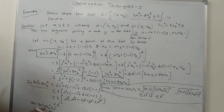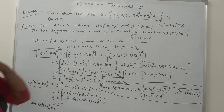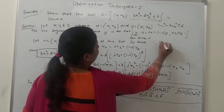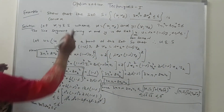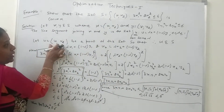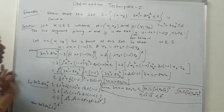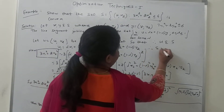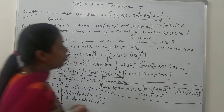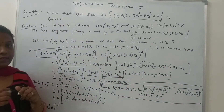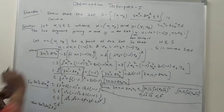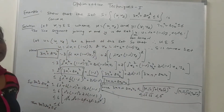So 3U1² + 2U2² ≤ λ²·6 + (1−λ)²·6 + 2λ(1−λ)·6 = 6[λ² + (1−λ)² + 2λ(1−λ)] = 6[λ + (1−λ)]² = 6. Therefore 3U1² + 2U2² ≤ 6, which means U belongs to set S. Therefore S is a convex set, because U is the line segment joining points X and Y and it lies in S.